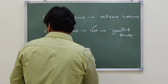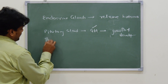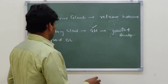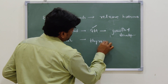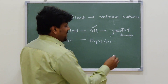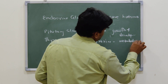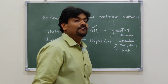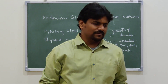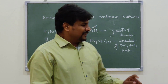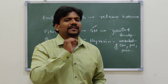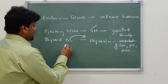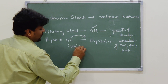The next gland is the thyroid gland, located in the throat. It produces a hormone called thyroxine, which regulates the metabolism of carbohydrates, fats, and proteins — meaning the breakdown of these molecules. A very important point: for the release of thyroxine, the body must have a proper amount of iodine.